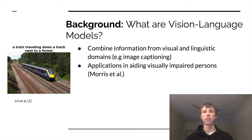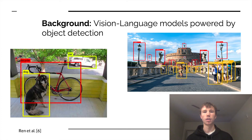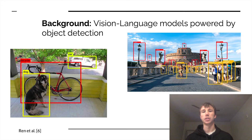There are various applications of vision language models. One important application is aiding visually impaired persons, for example by automatically creating alt text for digital images. Current vision language models are powered by object detection, which detects semantically distinct regions in an image. These models are able to create accurate and syntactically correct text; however, the text is often overly general, which detracts from the quality of the text, as humans often use named entities.